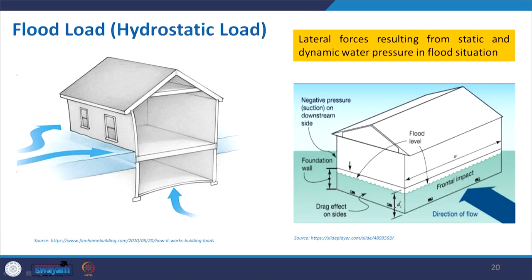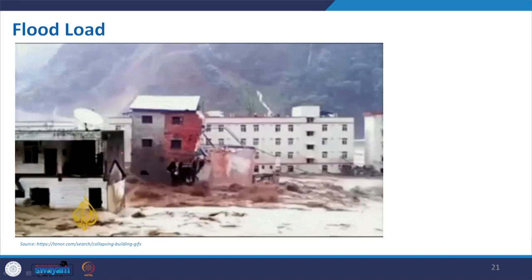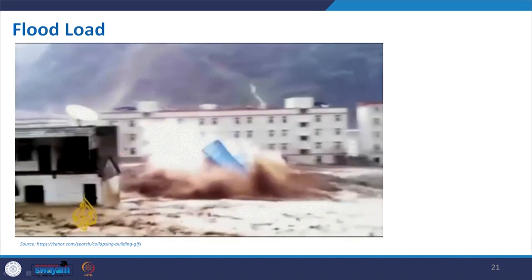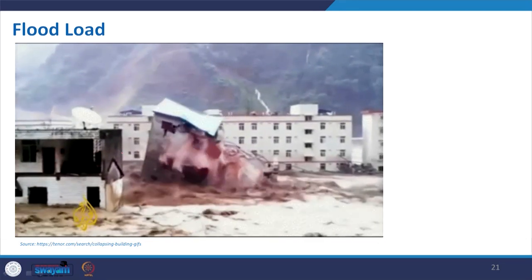Flood load is a hydrostatic load — it creates pressure in the direction of flow, drag effects from the side, and negative pressure or suction at the back. The volume and height of the flood level affects the damage. Due to flood, buildings can totally collapse — as recently experienced in Uttarakhand, India, where unprecedented rain and flood caused many buildings to collapse.